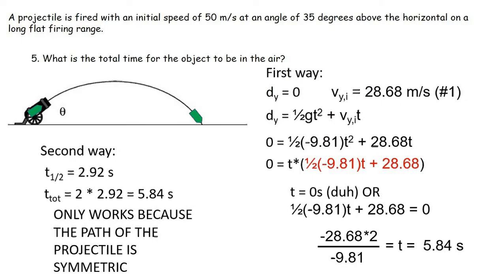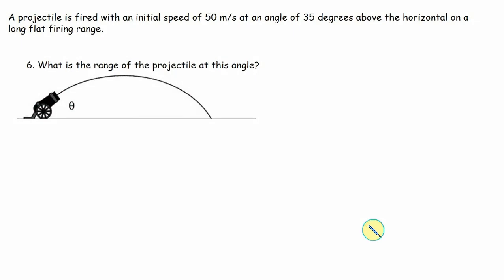All right, so we're going to start part two at this point. We have just finished up question number five, and we are moving on to question number six. Same problem. Question number six wants to know, what's the range of the projectile at this angle? So our angle is 35 degrees.